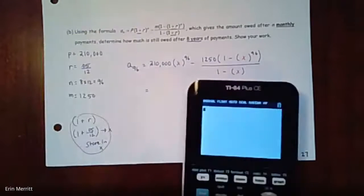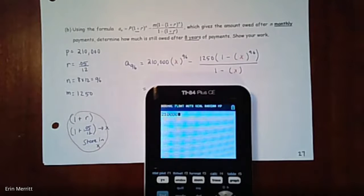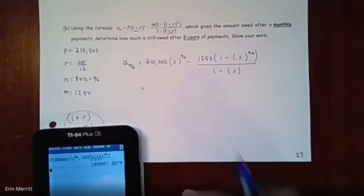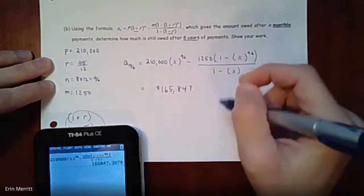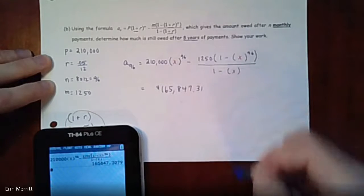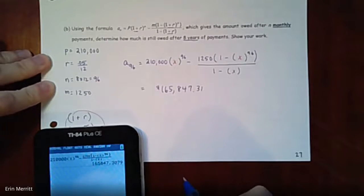Let's give it a try. Hopefully I set everything up correctly this time. Let's go: we have 210,000 times x, and I'm going to raise that to the 96th power, and then subtract 1250. Then times 1 minus x raised to the 96th power, close up that top parenthesis, and then on the bottom 1 minus x all by itself. What I end up with here is $165,847.31.